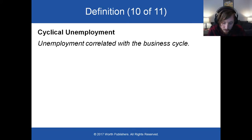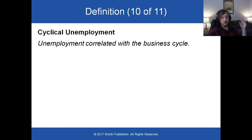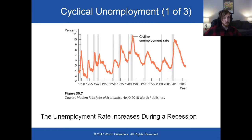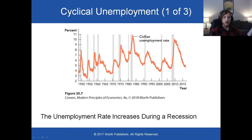Our third type of unemployment is cyclical unemployment. Cyclical unemployment is unemployment that is correlated with the business cycle. Here is a history of the U.S. economy over the last 60–70 years. The gray lines are recessions, and the orange trail is the civilian unemployment rate. We see that every time there's a recession, unemployment skyrockets — here's stagflation, here's the recession of the 80s, here's the tech bubble, here's the Great Recession.